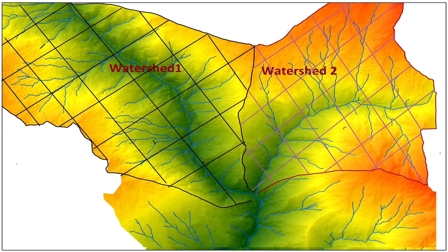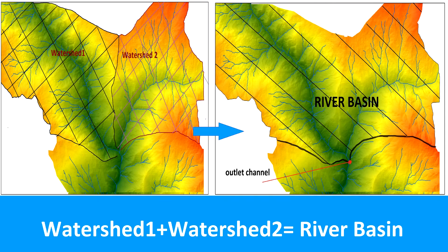In India, watershed is conceptually similar to a river basin but differs in scale. A watershed is a smaller unit of a river basin, consisting of the area of second or third order streams where runoff of first or second order streams joins. A river basin has many watersheds.